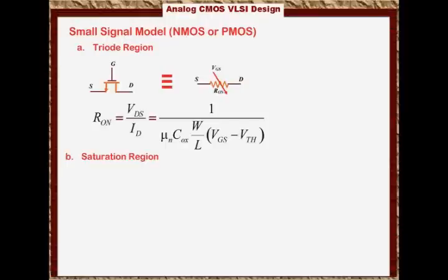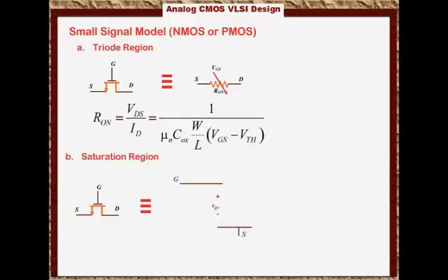The transistor is a four-terminal device, so when we do the small signal equivalent circuit, we will start with the gate. From the gate to the source, we will have an open circuit, because the gate is insulated from the source. And we are interested in the small signal voltage V_GS, which is the voltage from the gate to the source.